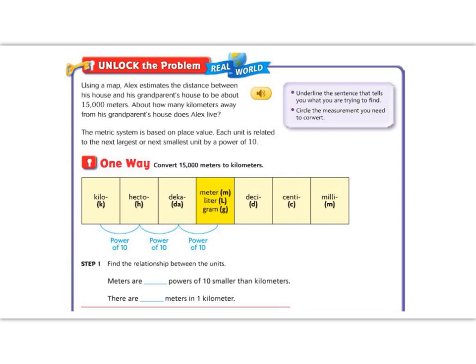Let's read the unlock the problem and see if we can solve this problem. Using a map, Alex estimates the distance between his house and his grandparents' house to be about 15,000 meters. About how many kilometers away from his grandparents' house does Alex live?